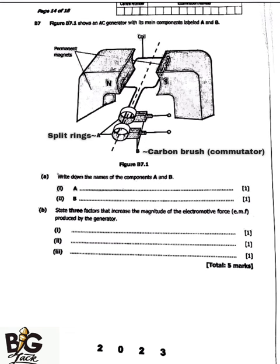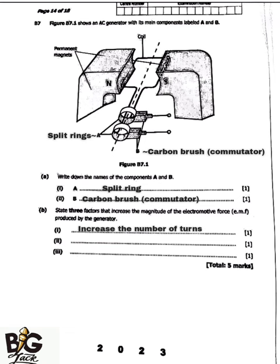The first question asks to write down the names of components A and B. Component A is called the split rings, and component B is called the carbon brushes or commutator. The next part asks for three factors that increase the magnitude of the EMF produced by the generator. The first factor is increasing the number of turns — when you increase the number of turns, the magnitude of the EMF increases.